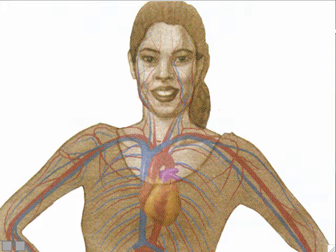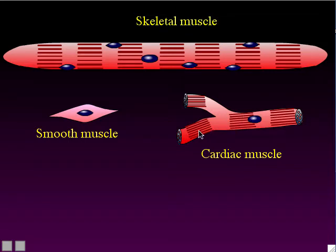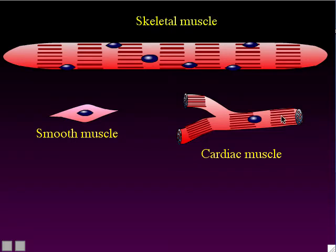Cardiac muscle tissue is not voluntary — it's involuntary. You do not consciously control when your heart contracts or relaxes. The cells of cardiac muscle tissue are branched — they are the only type of muscle cell that is branched. Cardiac muscle cells also have striations, just like skeletal muscle cells: alternating dark and light striations caused by the same thing — dark striations from stacks of myosin and light striations from stacks of actin.